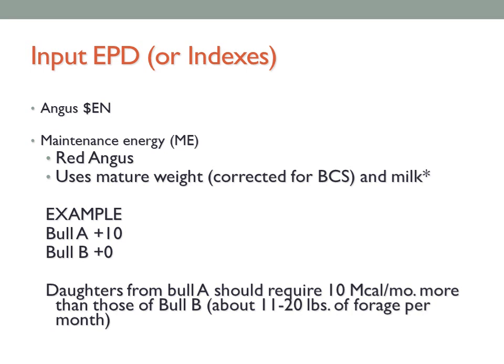What EPDs or economic index values focus on input traits? Angus's dollar energy value focuses on milk EPDs and mature size EPDs, giving producers a feel for which bulls may sire replacement females that are lower cost. Regis's maintenance energy EPD uses mature weight corrected for body condition plus the maintenance component of milk. Two bulls with maintenance energy EPDs of plus 10 and plus zero mean daughters from bull A should require about 10 megacalories more per month — roughly 11 to 20 pounds of forage per month more — than daughters from bull B.